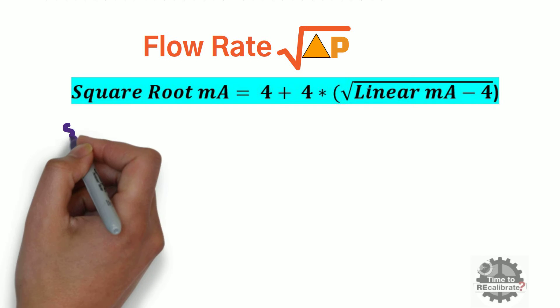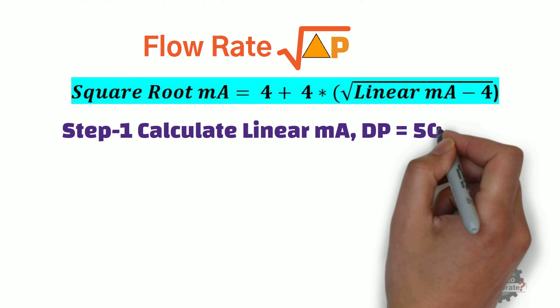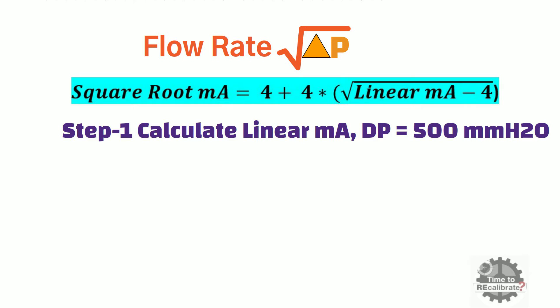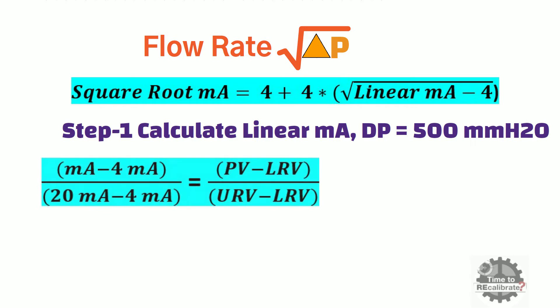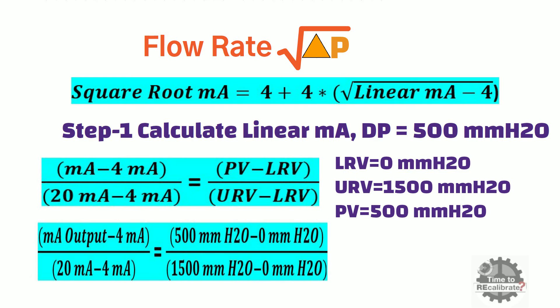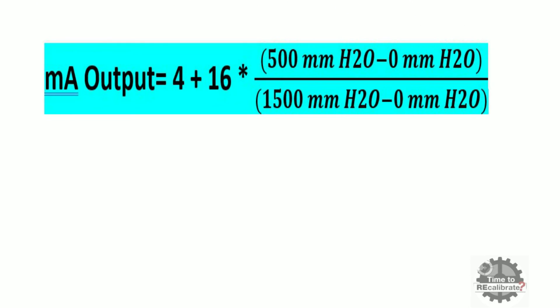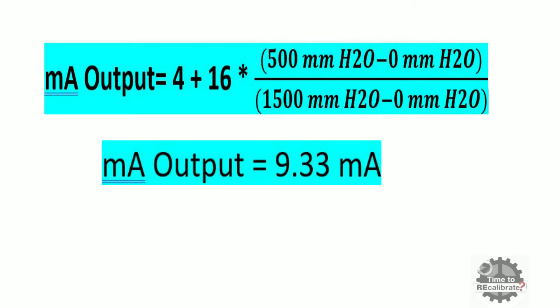So in step number one, I am going to find the value of linear milliampere when differential pressure is 500 mm H2O. This is the standard equation to calculate milliampere value. Now put the values of lower range value, upper range value, and process variable value in this equation and do the simple math calculation. When you do the math calculation, you will get 9.33 milliampere, which is our linear milliampere value.